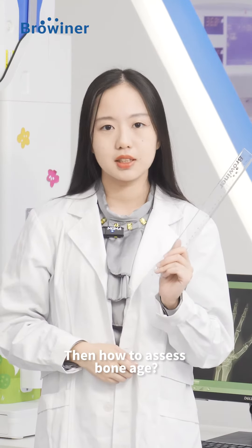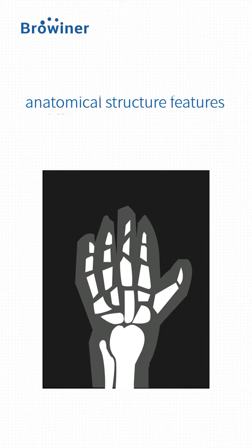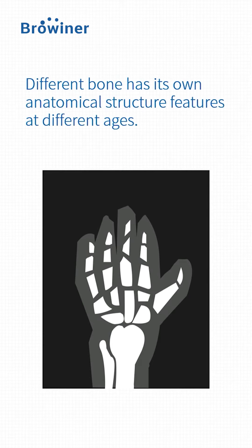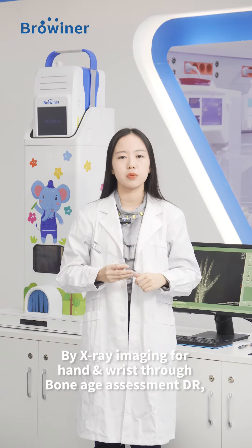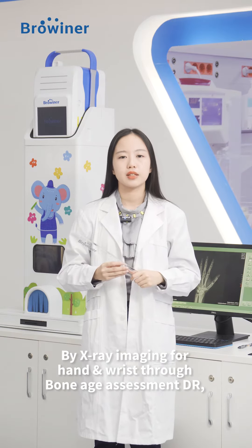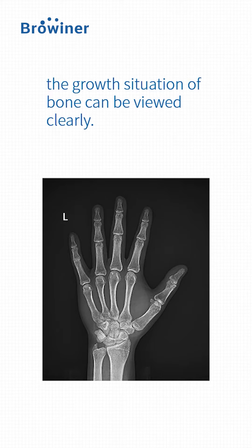So how do we assess bone age? Different bones have their own anatomical structure features at different ages. By X-ray imaging of the hand and wrist, a full bone age assessment DR allows the growth situation of bone to be viewed clearly.